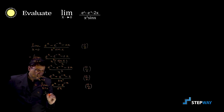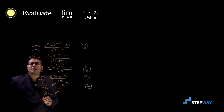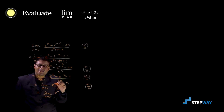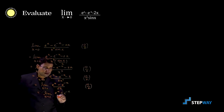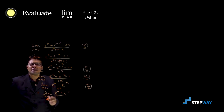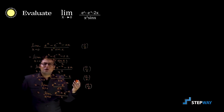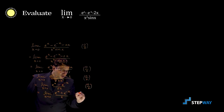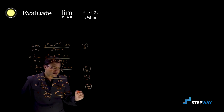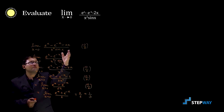Differentiating again, the numerator becomes e raised to x plus e raised to minus x, and the denominator becomes 6. Now putting x equal to 0: e raised to 0 is 1 and e raised to 0 is 1, so numerator is 1 plus 1 equals 2, and denominator is 6. The result is 2 by 6, which equals 1 by 3. So by using L'Hôpital's rule, we evaluate the 0 by 0 indeterminate form and the answer is 1 by 3.